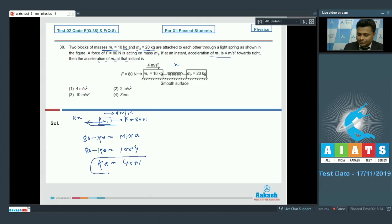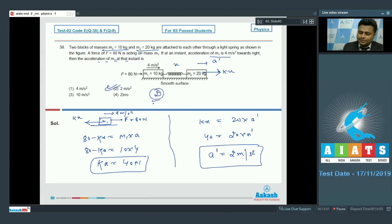Now we have got the value of kx. Now let us think about the forces acting on block m2. Only one force acting on m2, and that is kx. Compression in the spring, that's why spring will try to regain its length. For that it will exert a force kx, due to which m2 will move with acceleration a dash. Total force acting on m2 will be kx, which is equal to m into a dash, 20 a dash. kx is 40, 20 a dash, so therefore a dash is equal to 2 meter per second squared. Option number 2 we will go with.